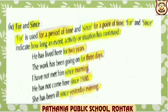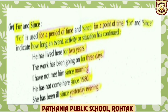Use of 'for' and 'since'. For is used for a period of time, and since is used for a point of time. For and since indicate how long an event, activity or situation has continued. For example: He has lived here for 2 years — preposition 'for' and period of time, that is, 2 years. Next example: I have not met him since morning — preposition 'since' is used to mention a point of time, that is, morning.